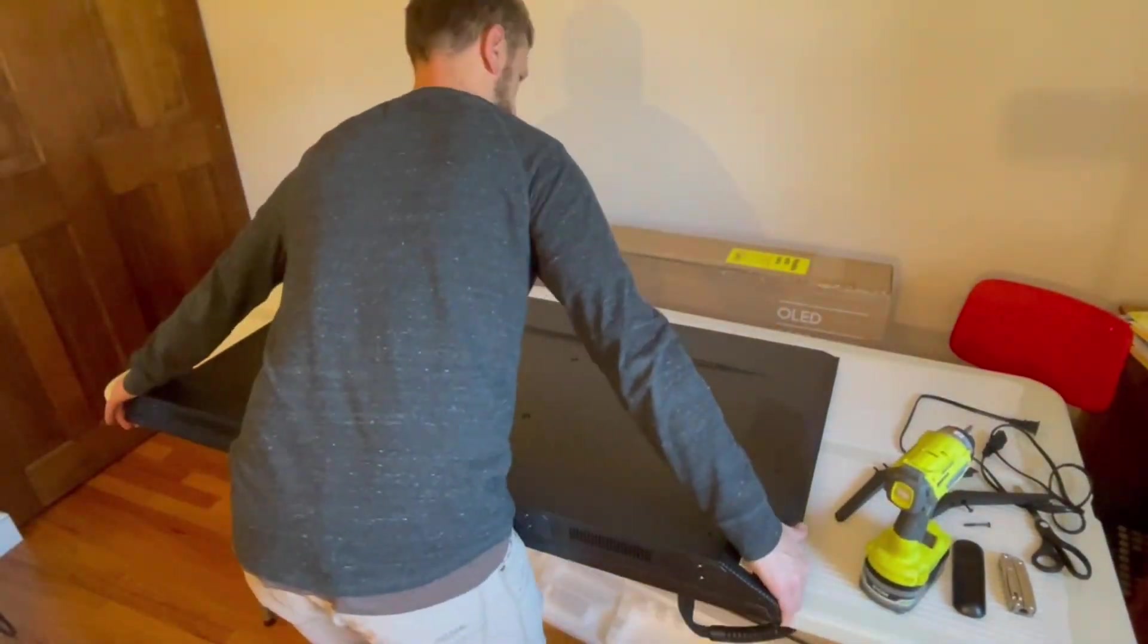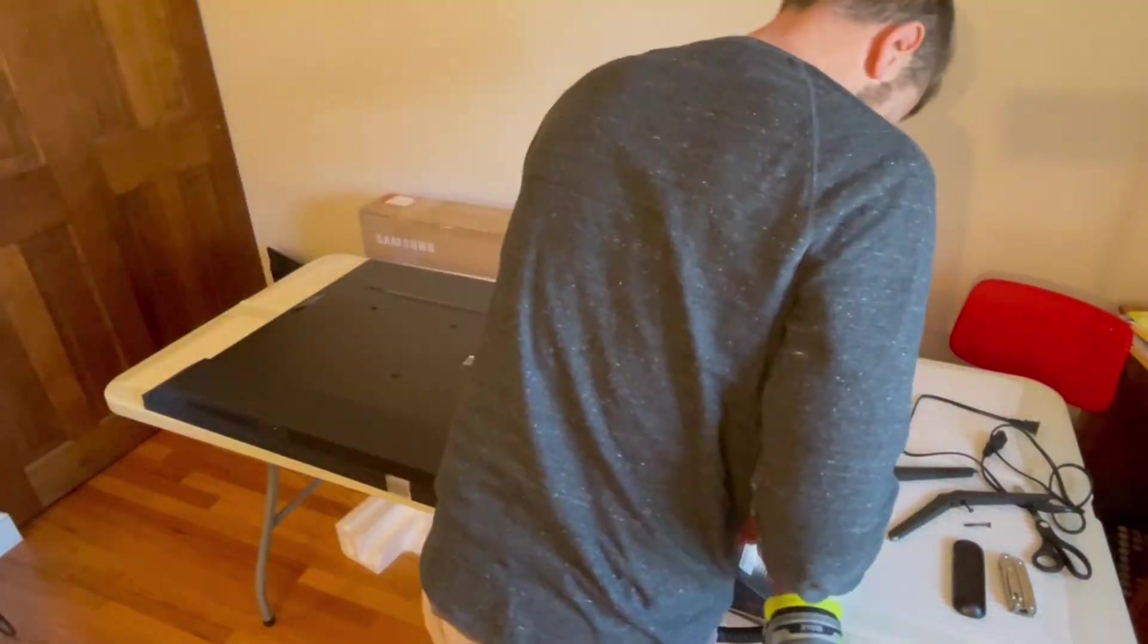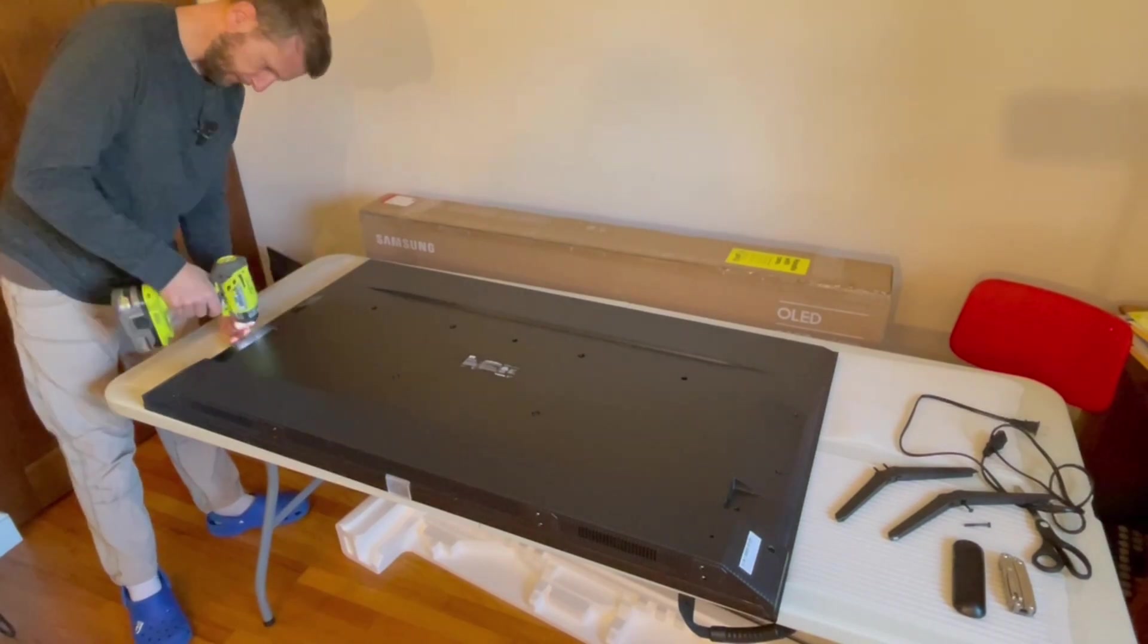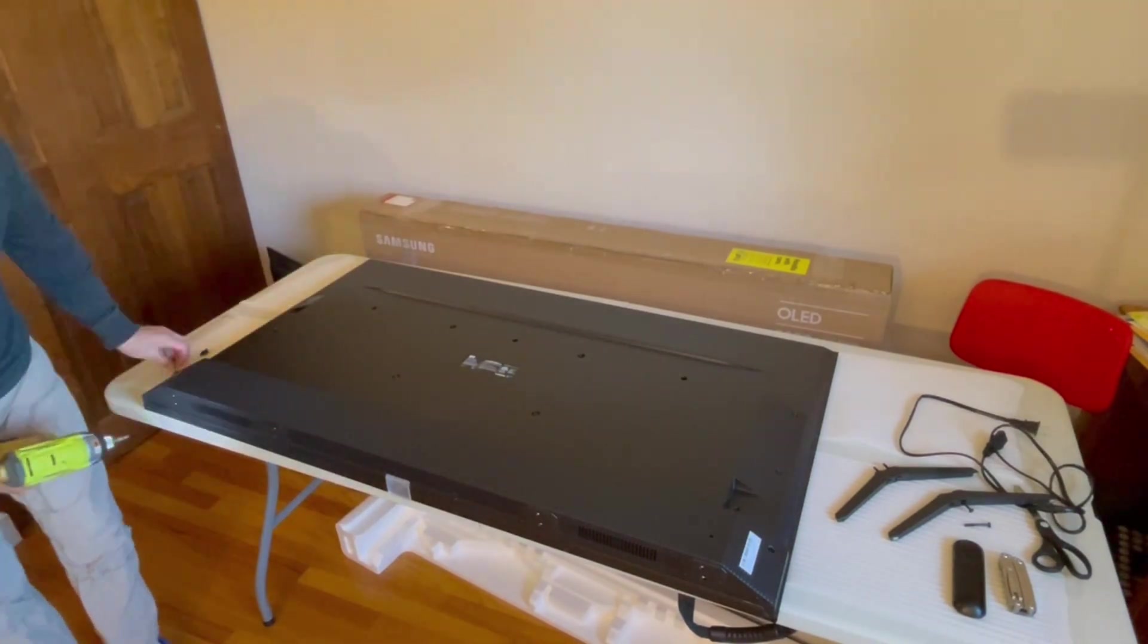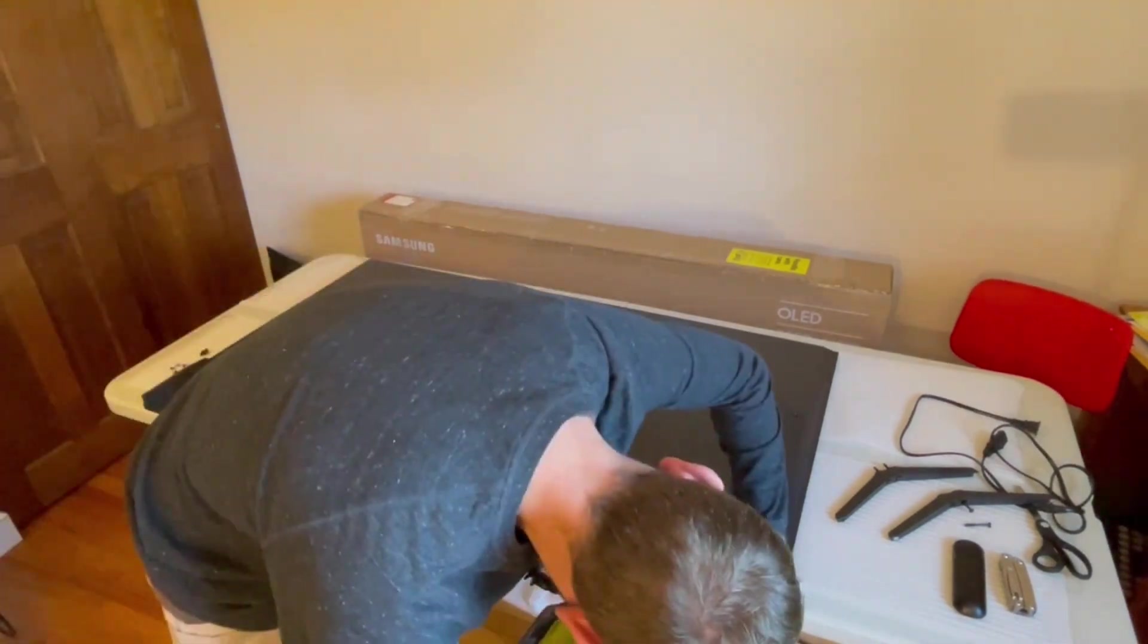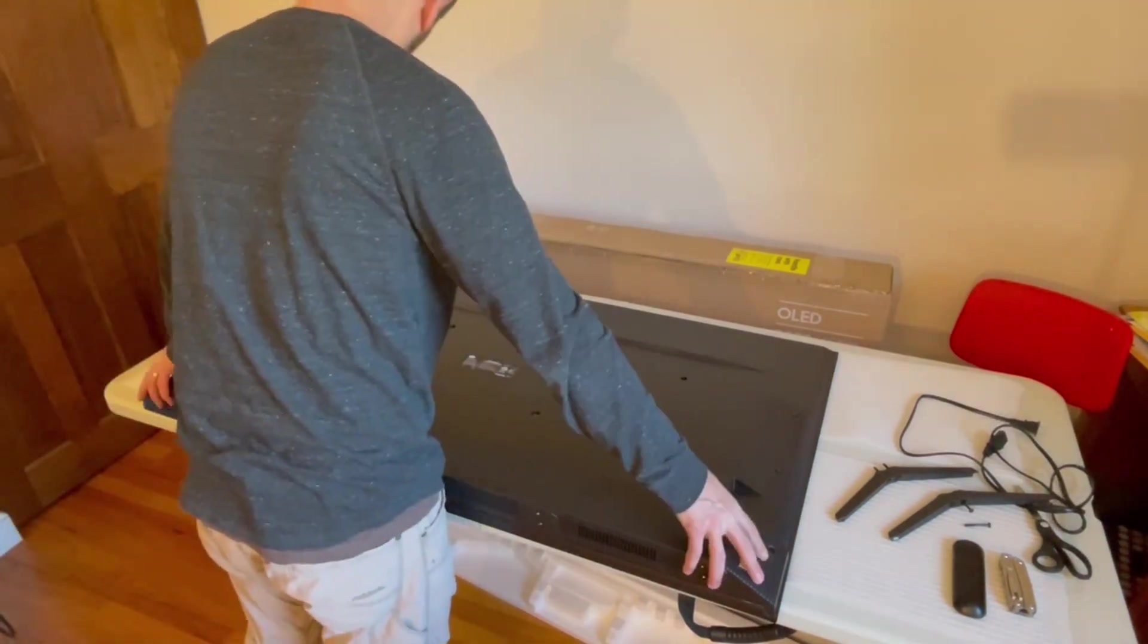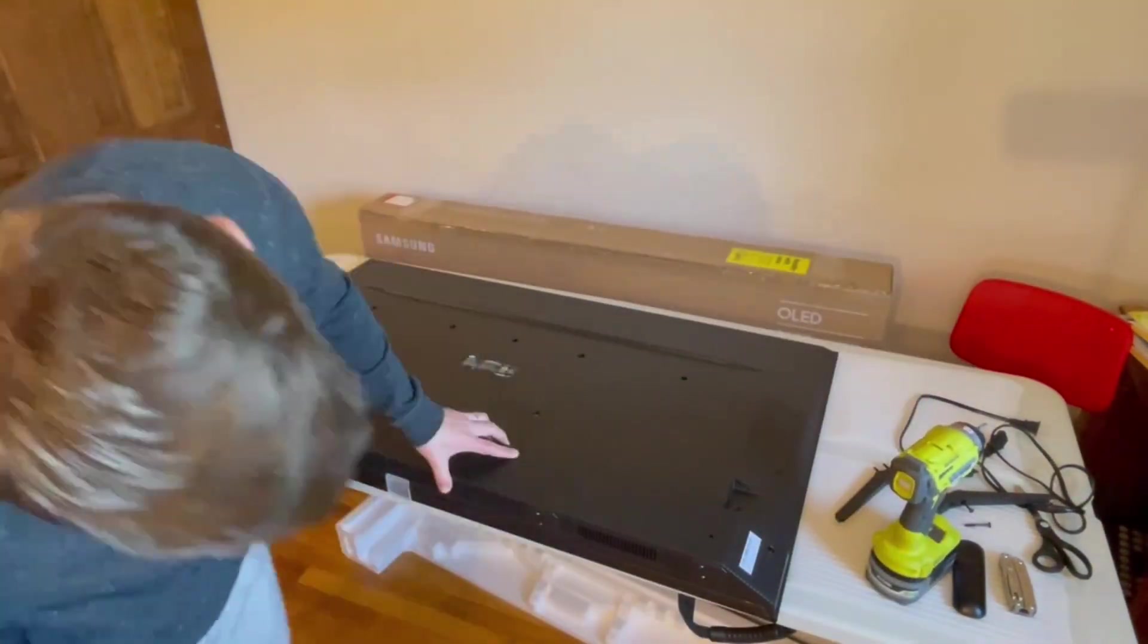So now that we've got that, we're going to get the back panel off this TV. I've sped this up for you because taking off all of these screws is quite time consuming sometimes. I hope I've kept track of them well enough to get this put back together. So we'll get this back panel popped off and you'll see all the electronics underneath.